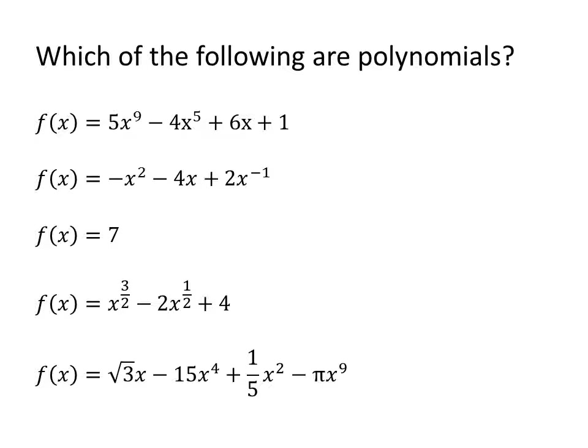So which of the following are polynomials? The first function, f of x equals 5x to the ninth power, is a polynomial. All of the coefficients are real numbers and, more importantly, the exponents are integers. This would be a degree 9 polynomial.